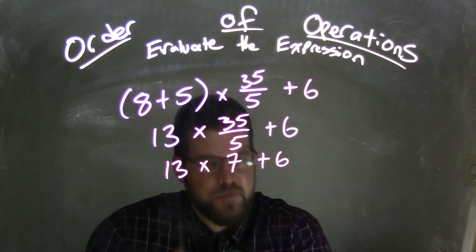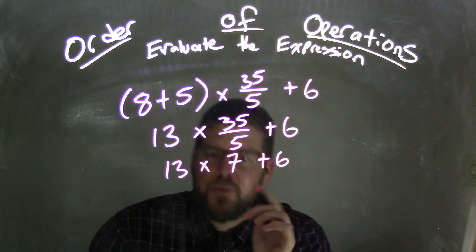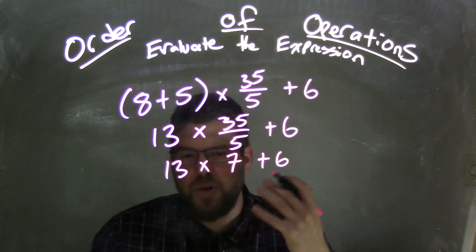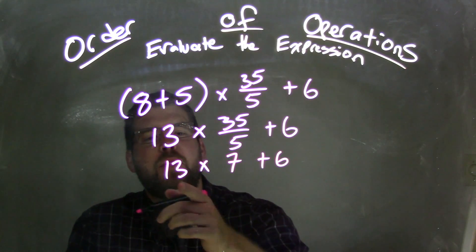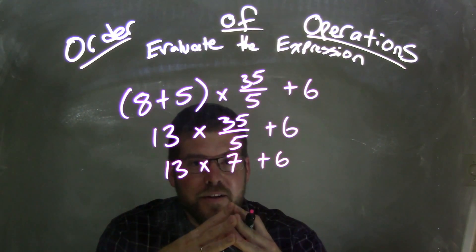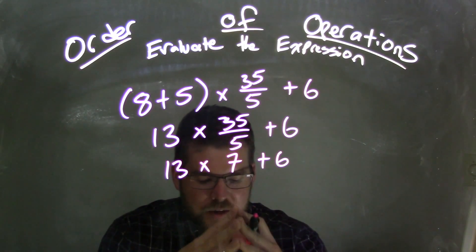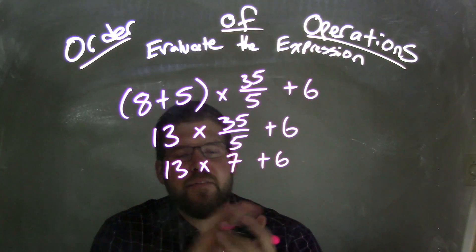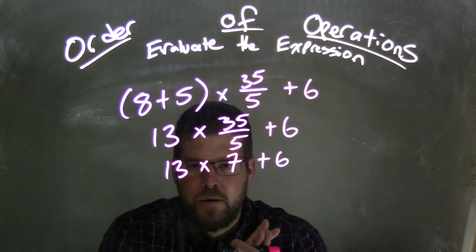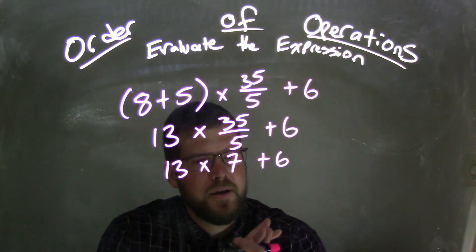And now order of operations matters more. Make sure you do multiplication and addition. I guess order of operations always matters, sorry. But 13 times 7, what does that come out to be? What is 13 times 7? Think about this. What's 7 times 10? 70. What's 7 times 3? 21. 70 plus 21 is 91.